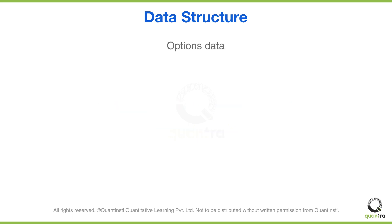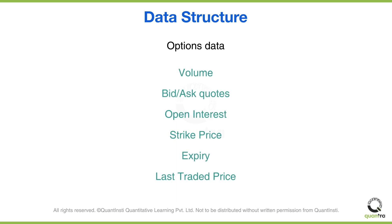The second part of the data structure is the options data itself. This includes the volume data, bid and ask quotes, open interest, strike price, expiry, and the last traded price.